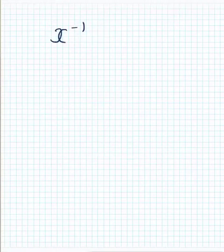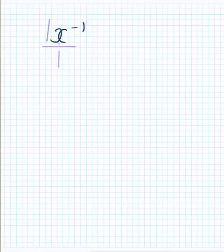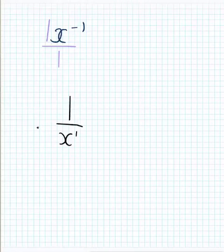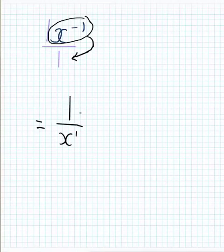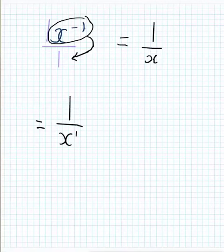Looking at x to the power of negative 1 more carefully: there is an invisible 1 in front of that x, and the x to the power of negative 1 is sitting on an invisible 1. To make the power positive, I move the x to the negative 1 from the top down to the bottom, and by doing that — by switching — it becomes positive x to the power of positive 1. That's how the index law works. The trick is: any negative powers on top, put them on the bottom; any negative powers on the bottom, put them on top. They automatically become positive.